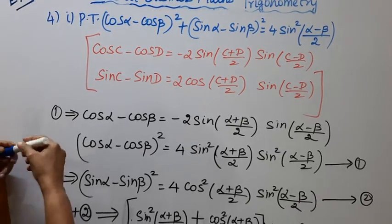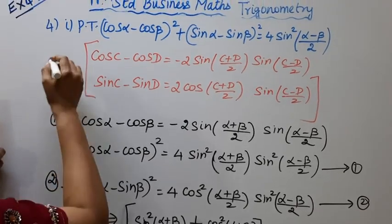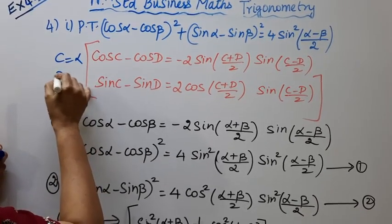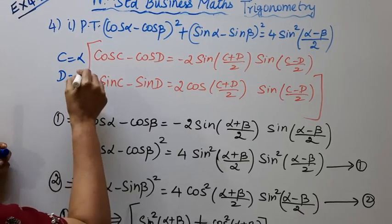Here, c equals alpha and d equals beta. We substitute these values into the formulas.